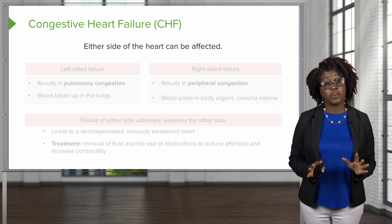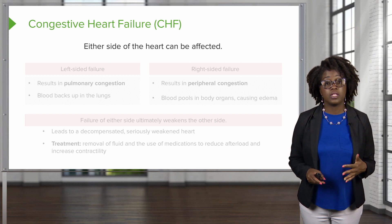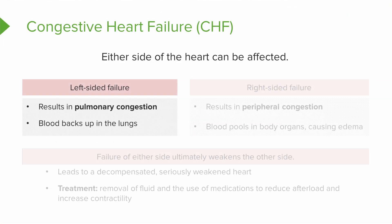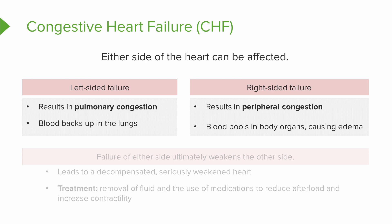With congestive heart failure, either side of the heart can be affected. If the left side of the heart fails, this is going to result in pulmonary congestion and blood being backed up in the lungs — because the lungs feed the left side of the heart, so if there's a failure here, the blood has nowhere to go and sits in the lungs. If the right side of the heart fails, this will result in peripheral congestion, where blood will pool in your body's organs, causing edema or swelling. Failure of either side is ultimately going to weaken the other side, as the other side becomes decompensated and thus seriously weakened.